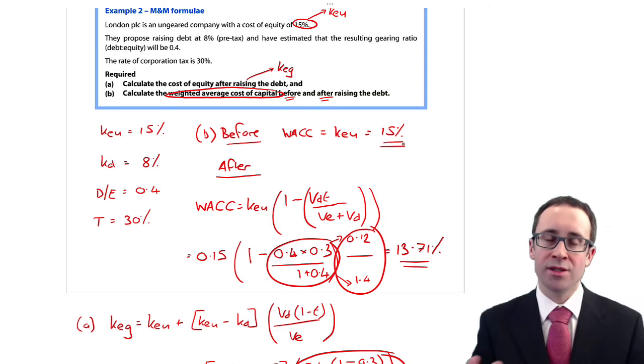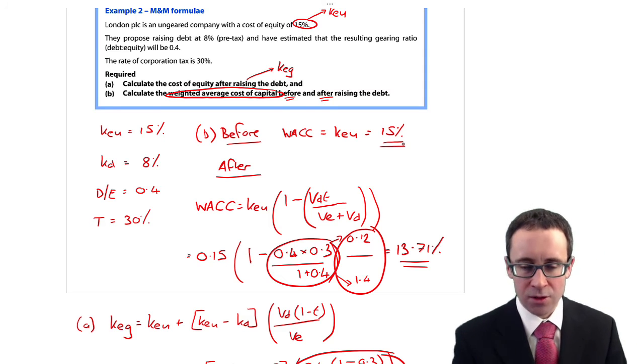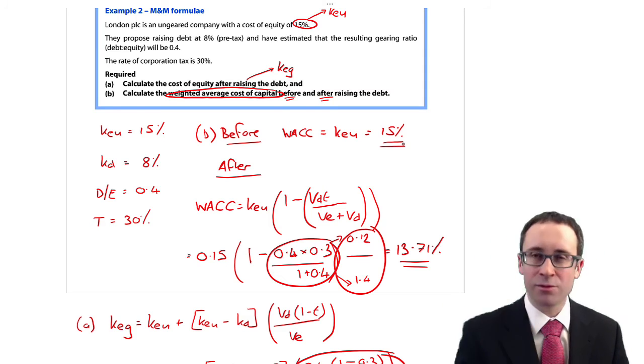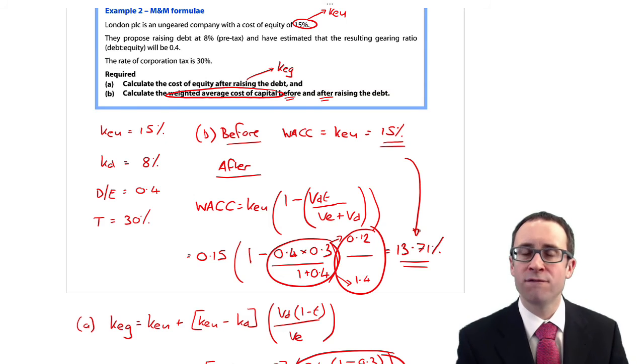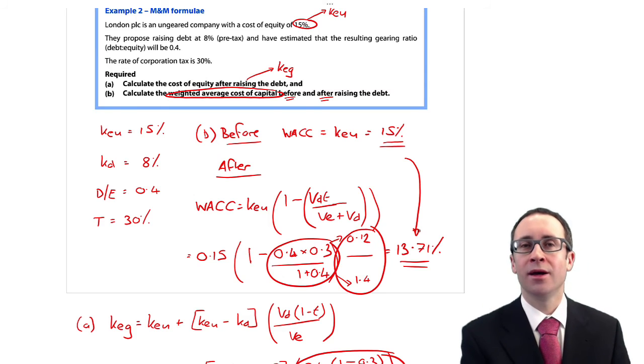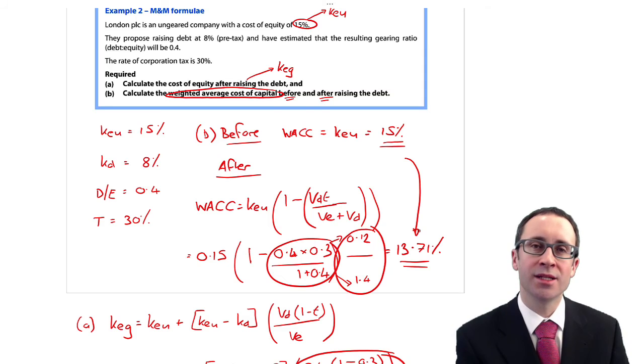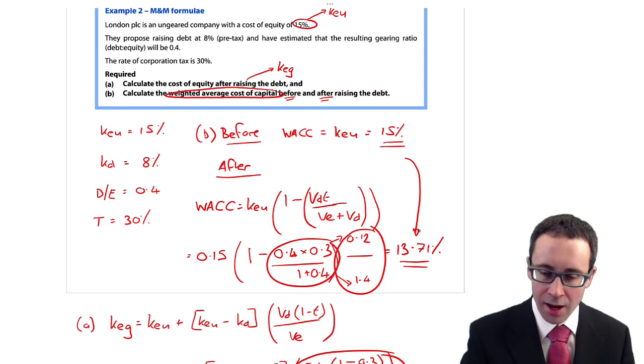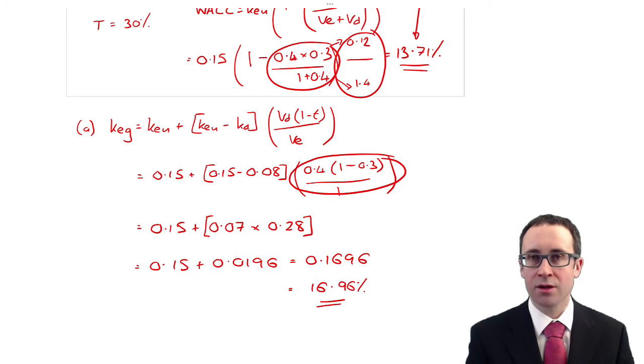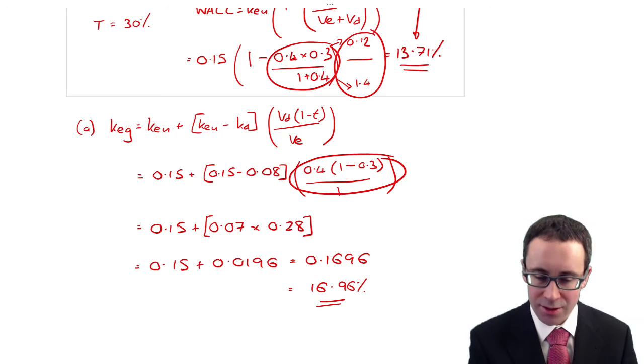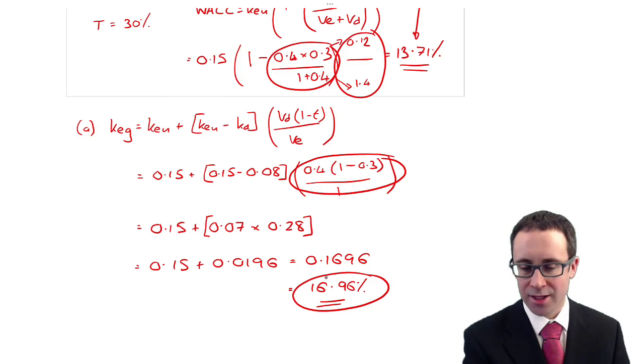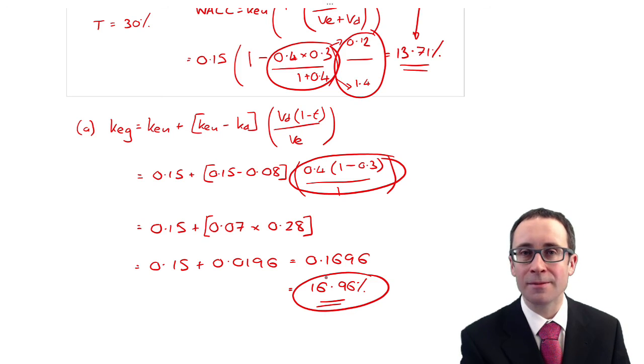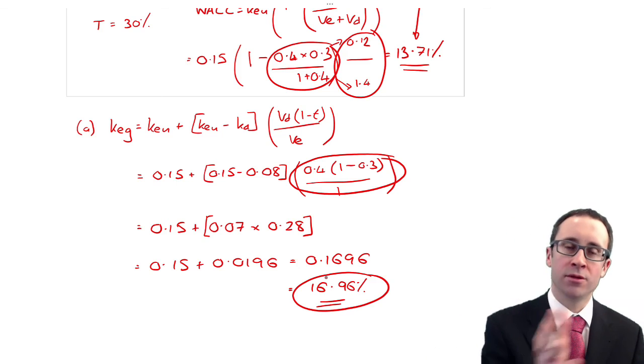Which, if we start applying it to the theories, now makes a little bit more sense. Because what you can go through and see there is that as we've increased the level of debt, the weighted average cost of capital has fallen, which is what we had in terms of M&M's theory from 1963 with tax. Likewise, as well, you can see the reason why that weighted average cost of capital has fallen, it's because the cost of equity for that geared business has increased. It was 15%, it's now nearly up there to 17%.